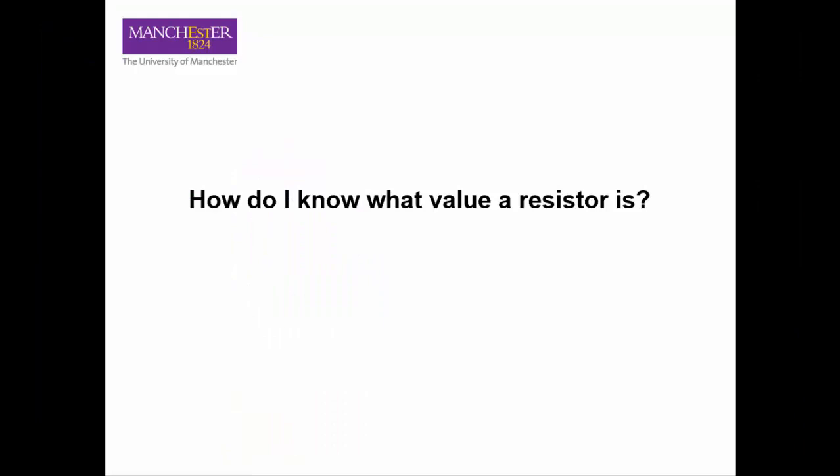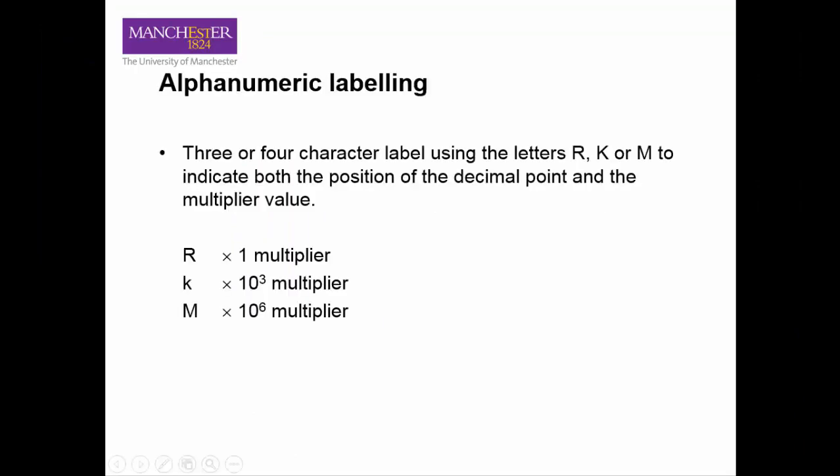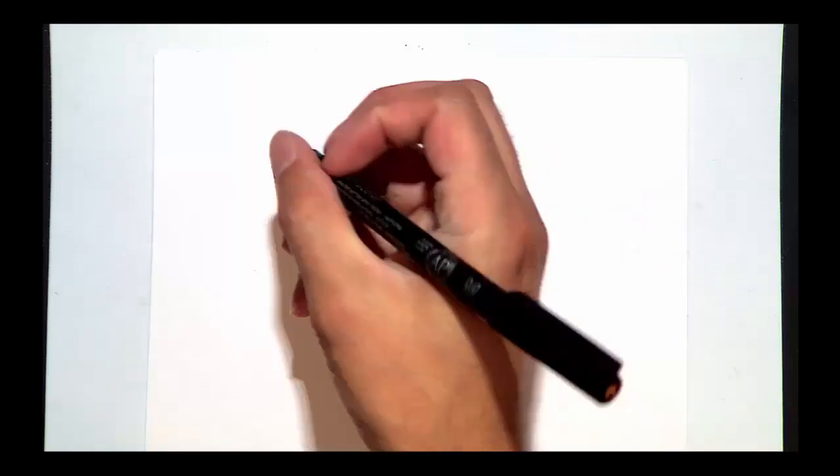How do I know what value a resistor is? There are two methods of resistor value labelling, colour codes and numbers. Regardless of the method, when you write down the value of a resistor, it is best to avoid using decimal points as they can often be misinterpreted. Letters are used instead, R, K and M to denote multipliers of 1, 1000 and 1 million.